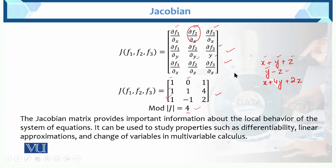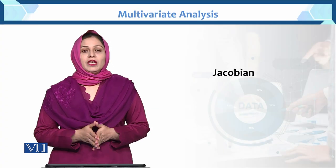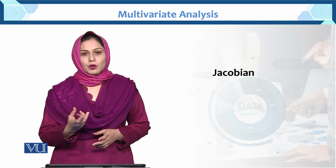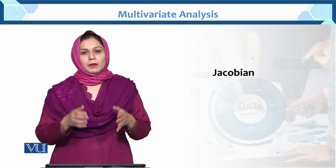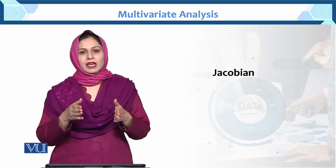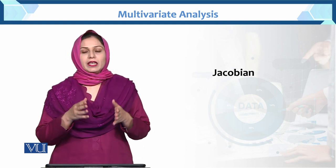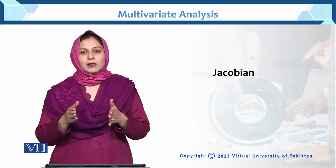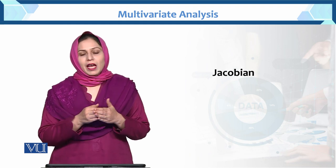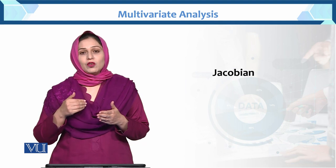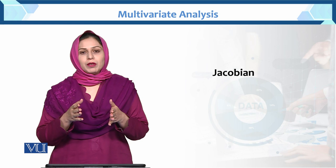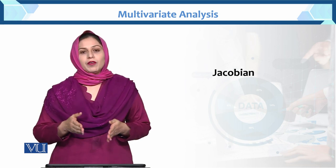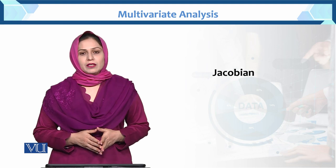The Jacobian matrix basically provides important information about the local behavior of the system of equations. Students, is particular example mein humnye transformed variable ki rate of change find ki hai — uski derivative li hai, Jacobian find ki hai. Aage yeh Jacobian multivariate normal distribution mein bahut zyada use hoga. Basic concept humnye yahan par determine kar liya hai, then hum isko further apply karenge multivariate normal distribution mein.